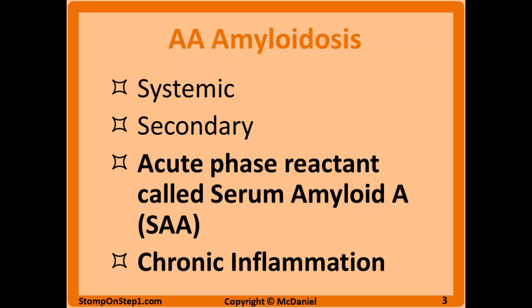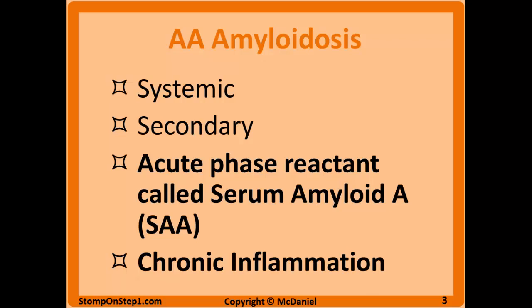AA amyloidosis is also a systemic form of amyloidosis, but it's a form of secondary amyloidosis, meaning it's caused by some other disease. Usually this is some sort of chronic inflammation, and this type of chronic inflammation causes an increase in acute phase reactants. Primarily the acute phase reactant we're talking about is serum amyloid A, or SAA. This overexpression of SAA leads to an excess which then aggregates and causes amyloidosis.